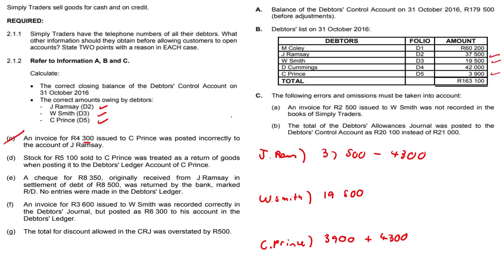Stock for 5,100 was sold to C Prince but was treated as a return of goods when posting to the debtors ledger account of C Prince. We have a major issue here — we need to take it out and add it back in again. It was treated as a return, so we add back the 5,100. But the net effect is zero, and we don't want that — we want it shown as stock sold. So we add another 5,100, meaning 5,100 times two.